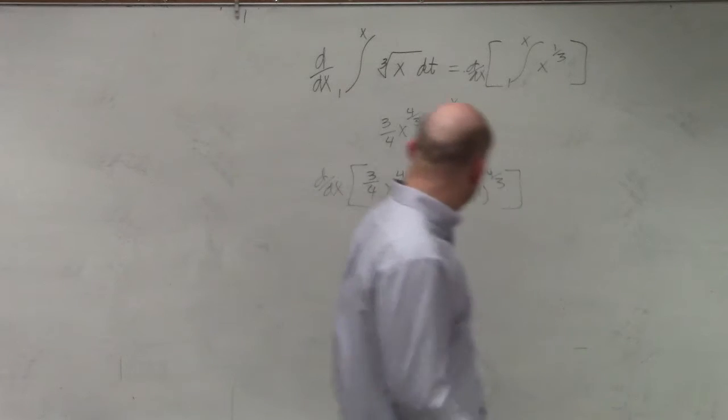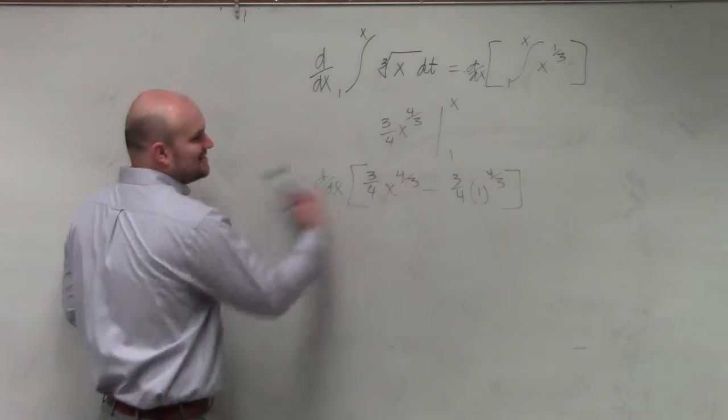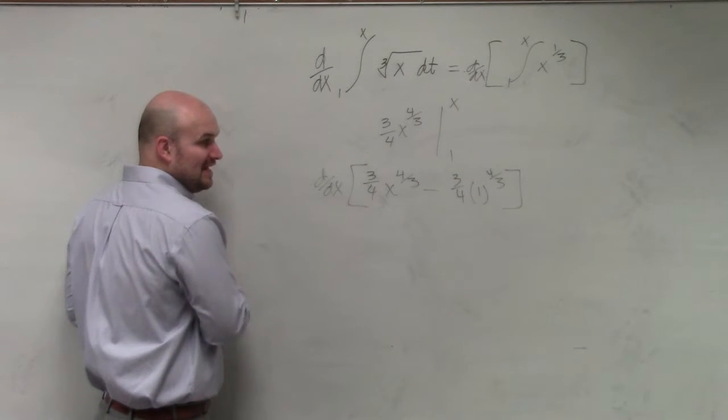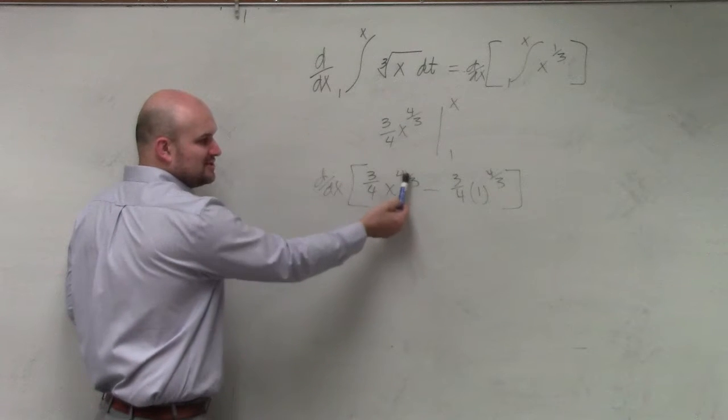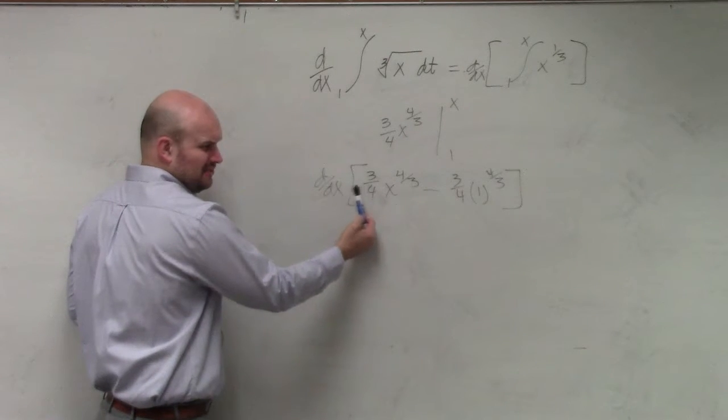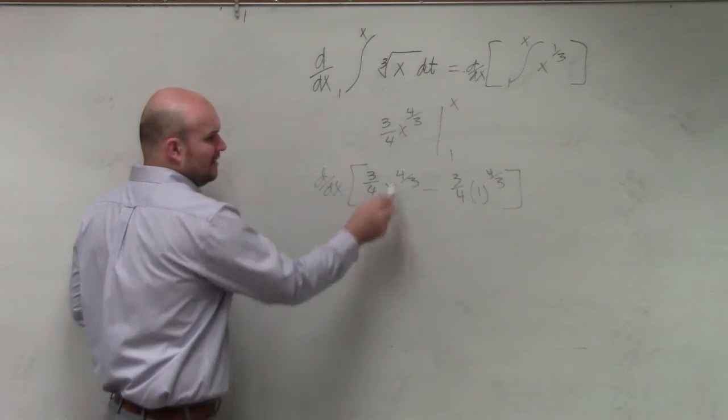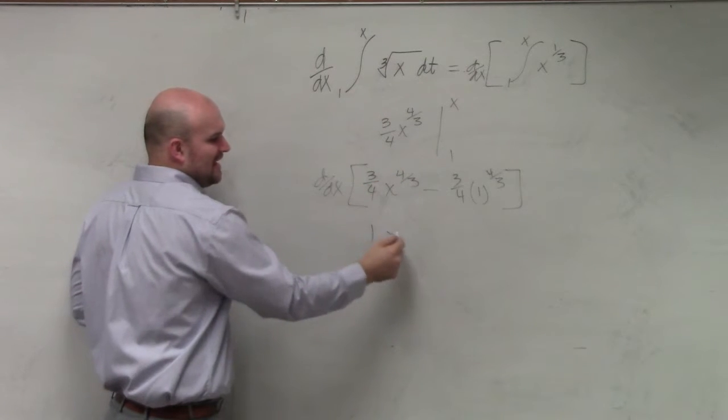Like 0 for 2 today. Then, obviously, if we're going to go ahead and differentiate, we're going to bring down the 4/3. So 4/3 times 3/4, those are reciprocals, so that's just going to equal 1. You subtract 3 over 3, which is going to be x to the 1/3.